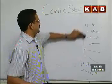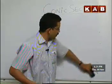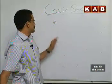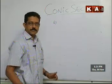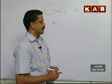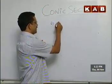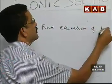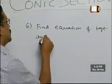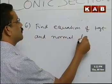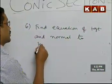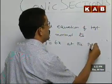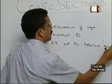The 6th question — please look at it carefully. These are all important models. Find the equation of tangent and normal to y² = 6x at the positive end.